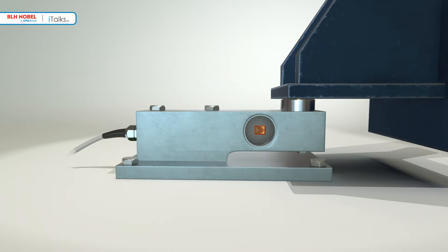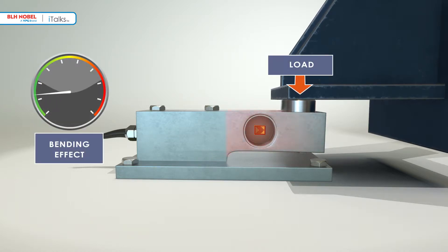In a simple shear beam, there are also bending strains present, which contribute to the output. Under laboratory conditions, the bending effects though present are small in comparison to the applied load and thus do not adversely affect the accuracy of the load cell.